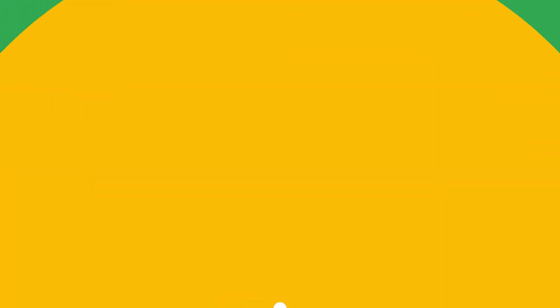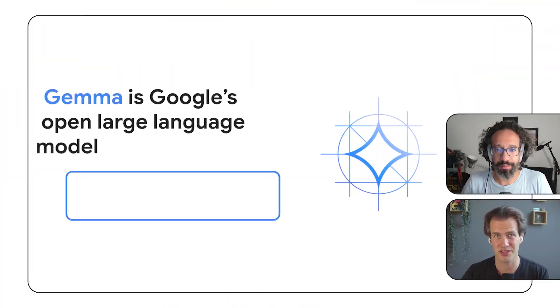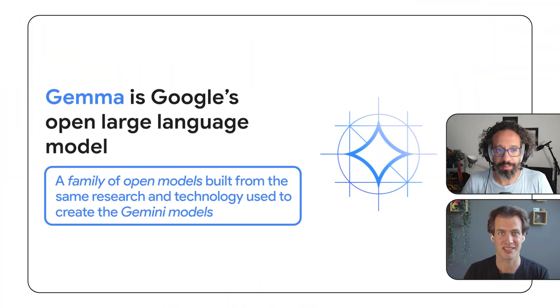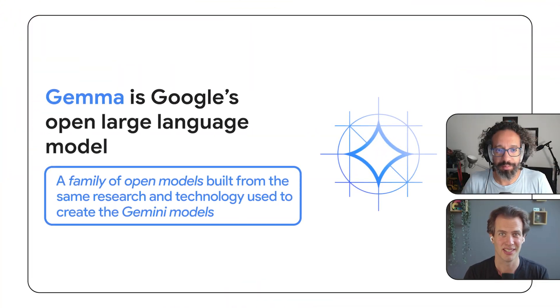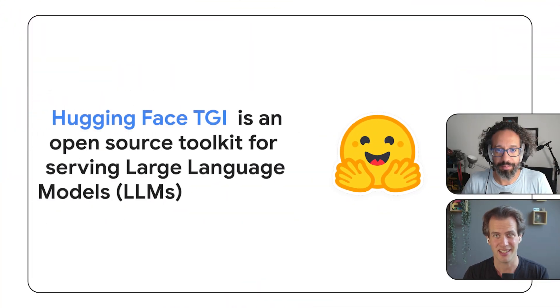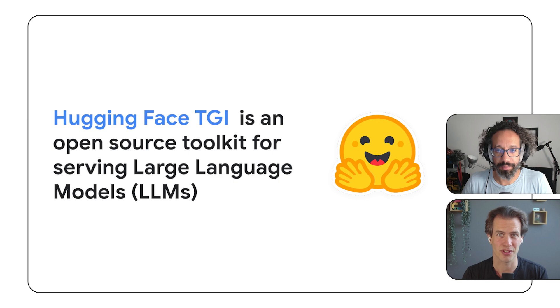That sounds complicated. Can you break it down for us? Sure. Let's go over some terms first. Gemma is Google's open large language model, and TGI is an open source text generation inference server from Hugging Face.